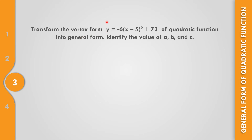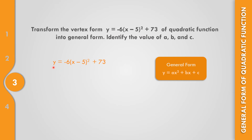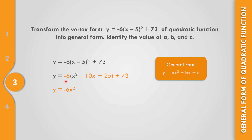For example number 3, transform the vertex form y equals negative 6 times the quantity x minus 5 squared plus 73 into the general form, and identify a, b, and c. We copy the equation and distribute: x times x is x squared, x times negative 5 is negative 5x times 2 giving negative 10x, and negative 5 times negative 5 is positive 25. Bring down 73. Now distribute negative 6: negative 6 times x squared is negative 6x squared, negative times negative gives positive, so negative 6 times negative 10x is positive 60x, and negative times positive 25 gives negative 150.